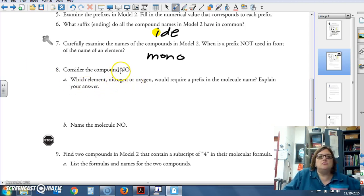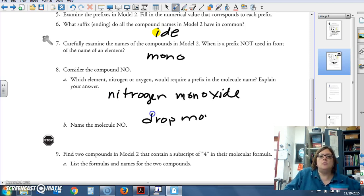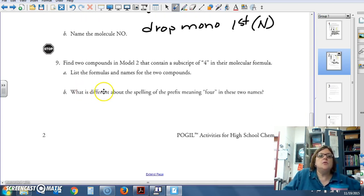Which element in nitrogen and oxygen would require a prefix? If we have nitrogen oxide. Well, the oxygen one. So, we would name him nitrogen monoxide. Because we can drop the mono for the first one, which is nitrogen.